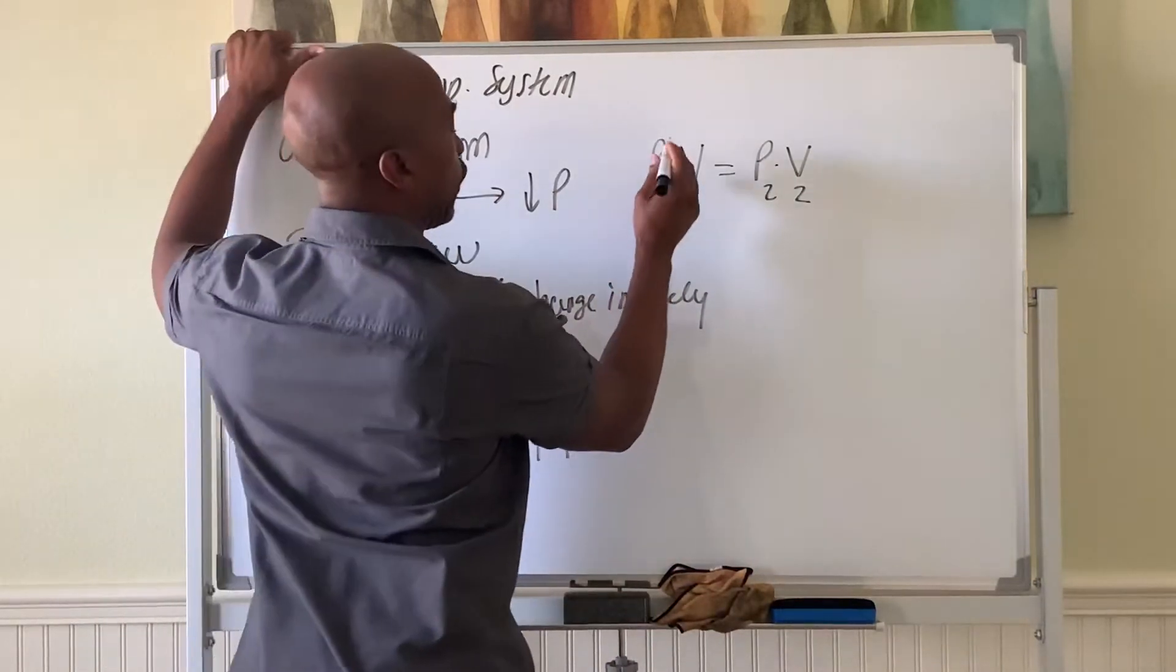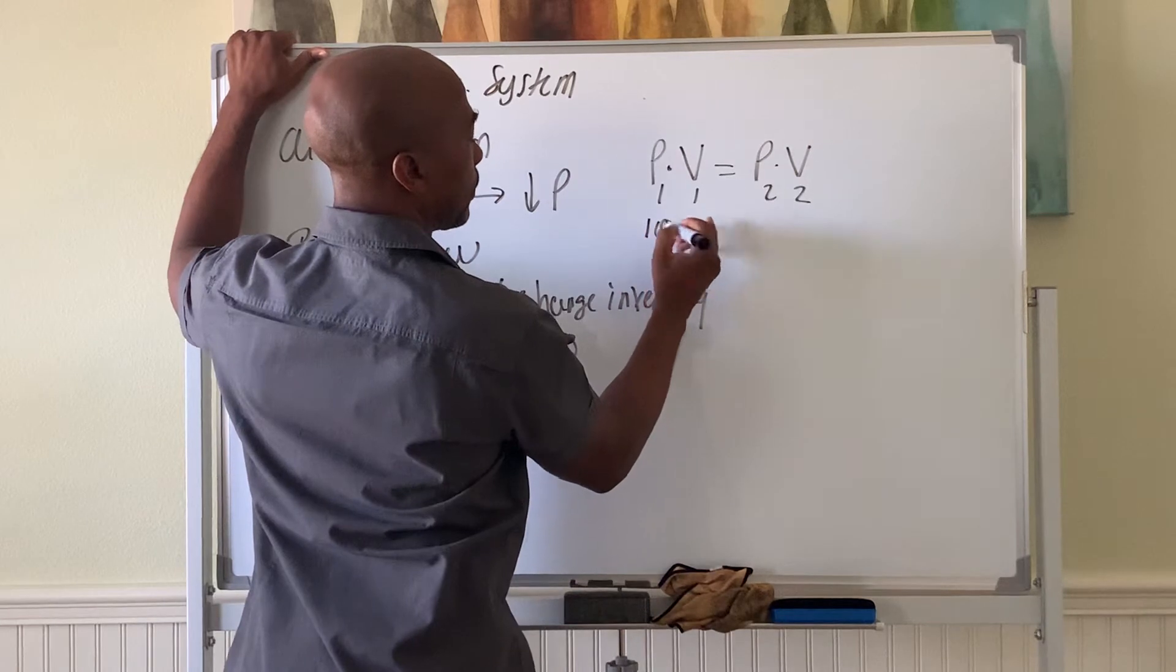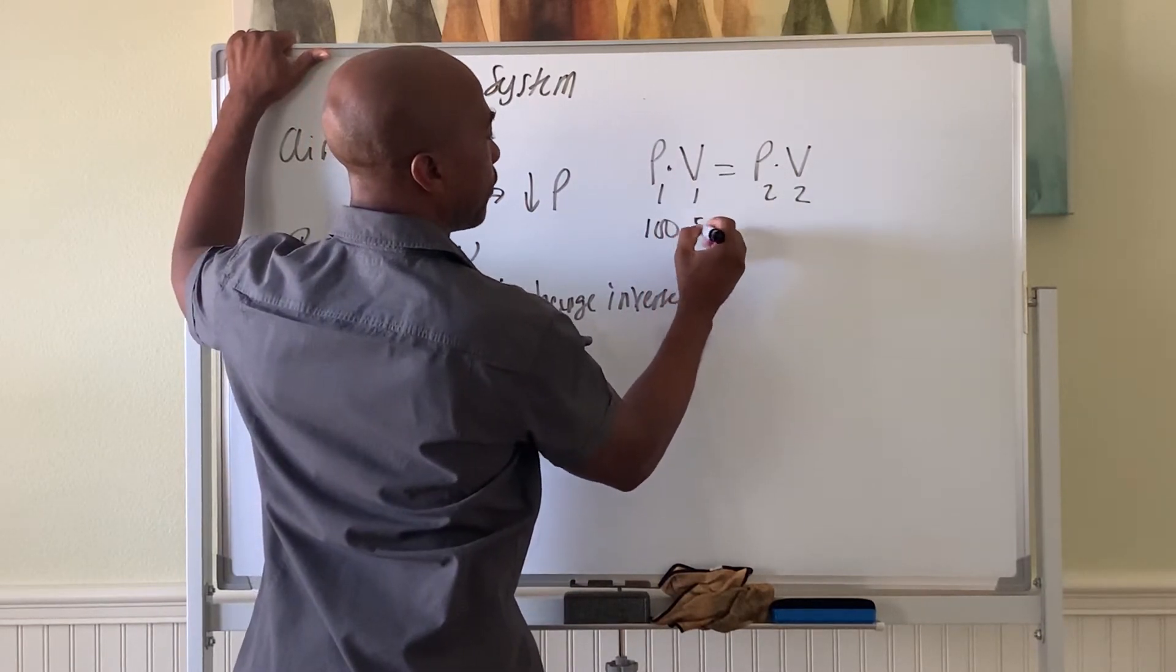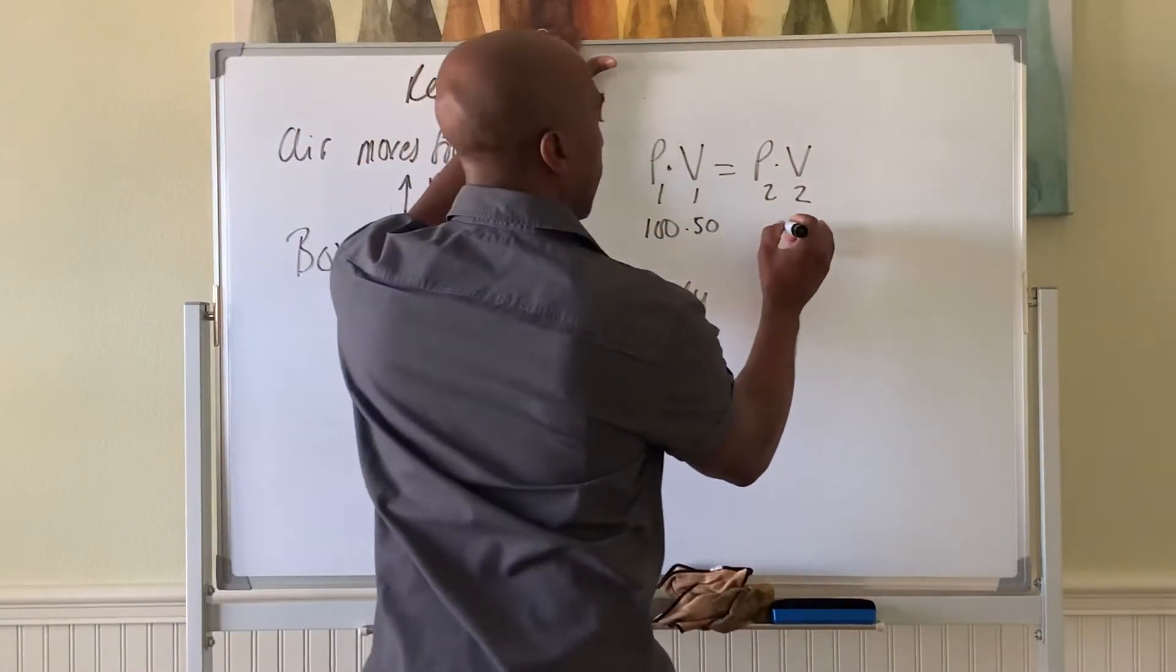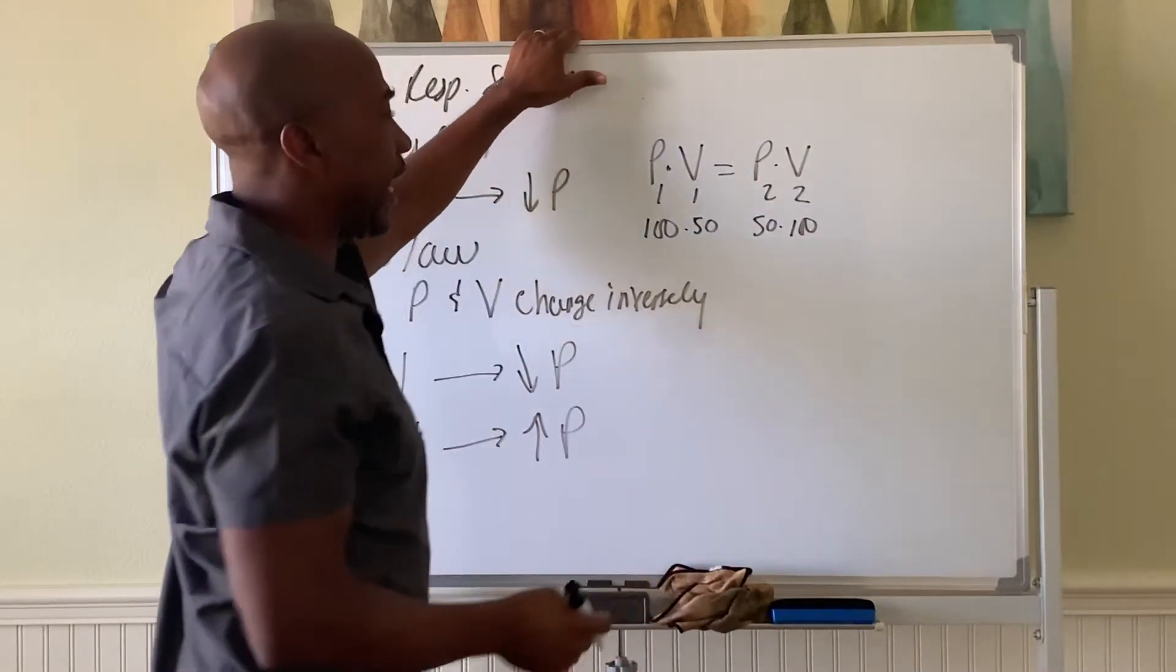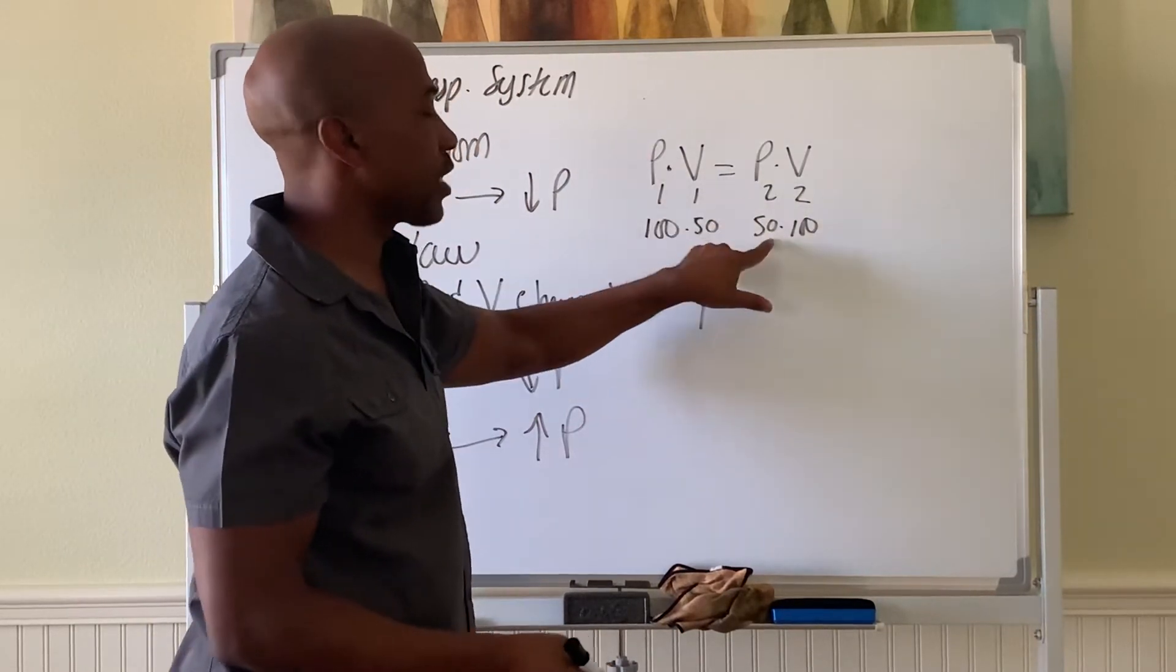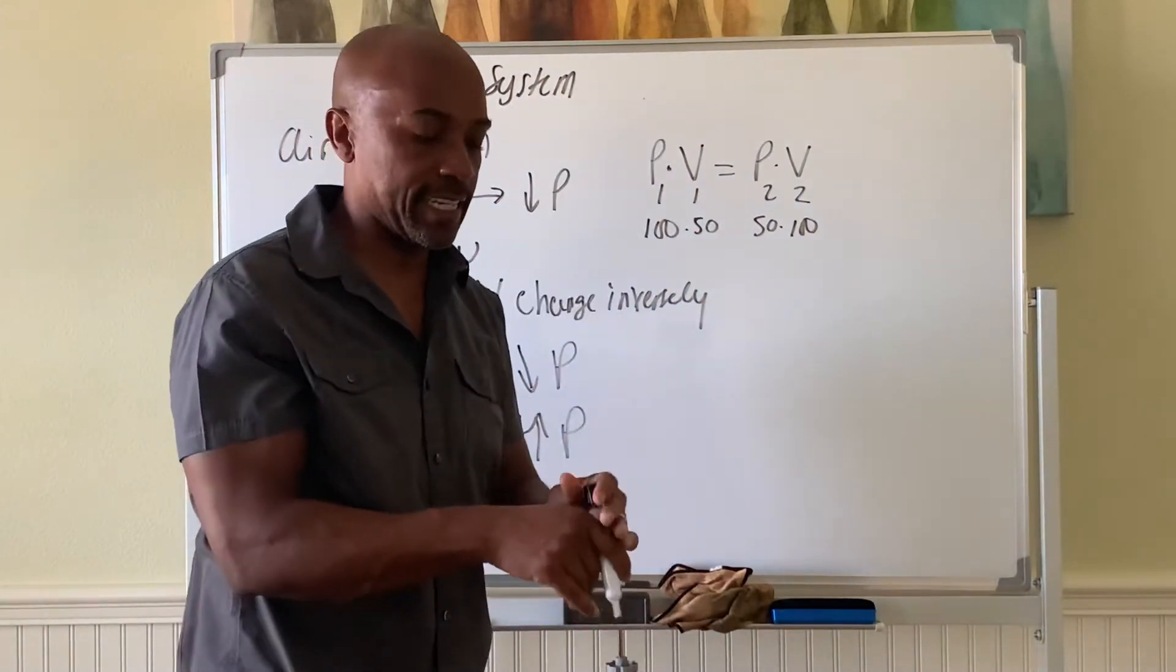Let's try it. So for example, here, if the pressure here is 100 and the volume is 50, if over here you change the volume to be, say, 100, now the pressure must be 50. So as the volume doubled, the pressure was half, because they must change inversely. That's Boyle's Law.